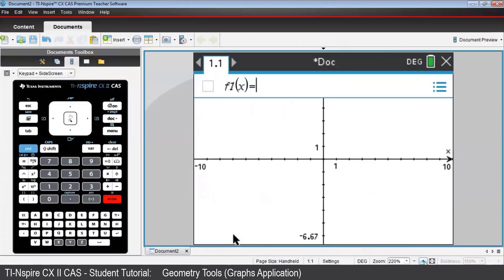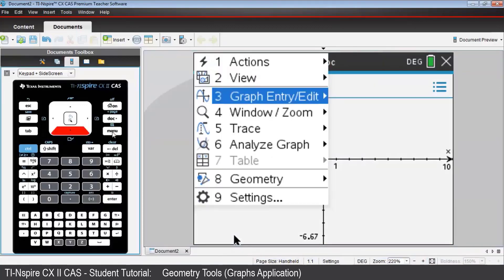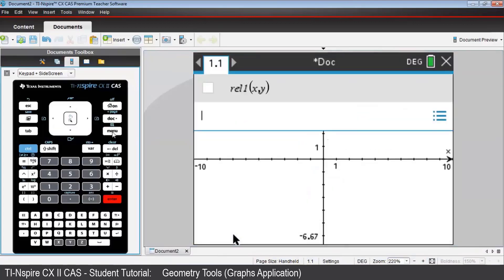We'll want to use relational graphing with y equals instead of f of x equals, so from the Graphs menu, select Graph Entry Edit, then choose Relation. In this space, type y equals x squared, and press Enter.